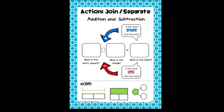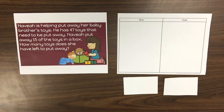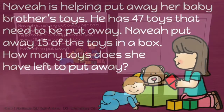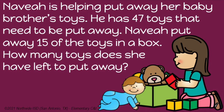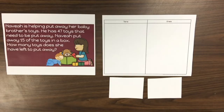Let's look at a real world scenario where a two digit number is separated. Nevaeh is helping put away her baby brother's toys. He has 47 toys that need to be put away. Nevaeh put away 15 of the toys in a box. How many toys does she have left to put away? Using the place value chart we will represent the toys that Nevaeh needed to put away at the start using linking cubes.